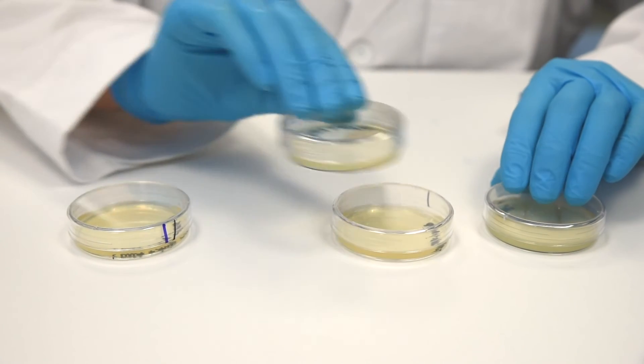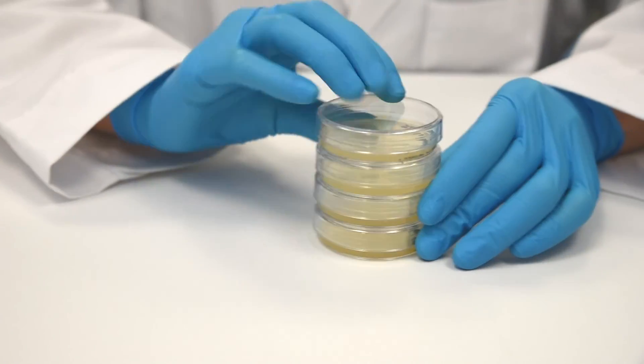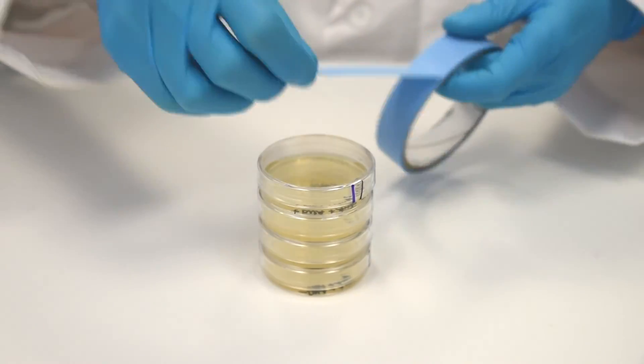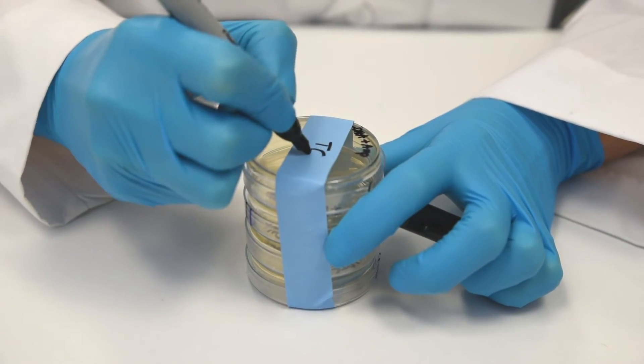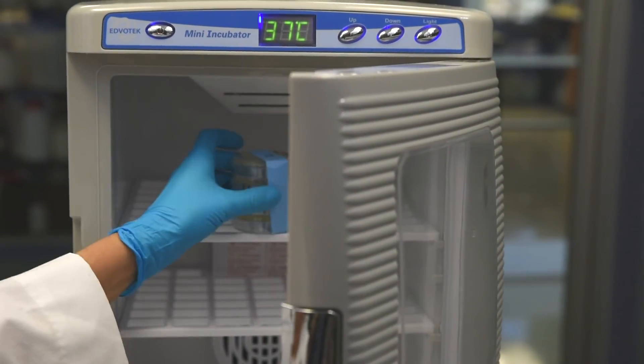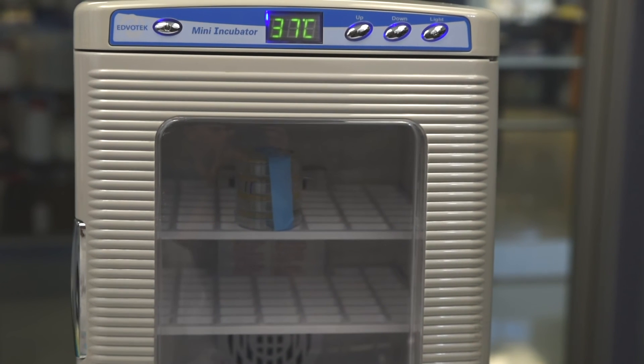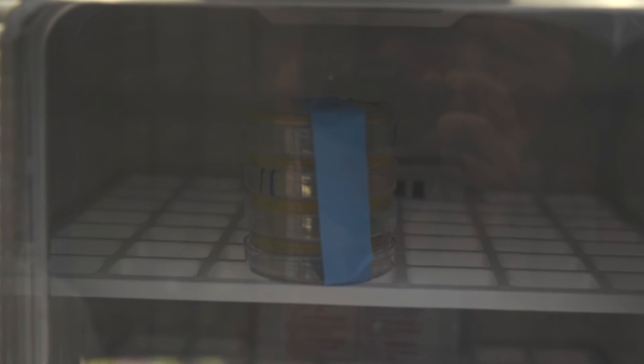Step 16. Stack the plates on top of one another and tape them together. Label the plates with your initials or group number. Once you are sure that the liquid has been absorbed into the agar, place the plates in the inverted position, agar side on top, into a 37 degrees Celsius bacterial incubation oven for overnight incubation.